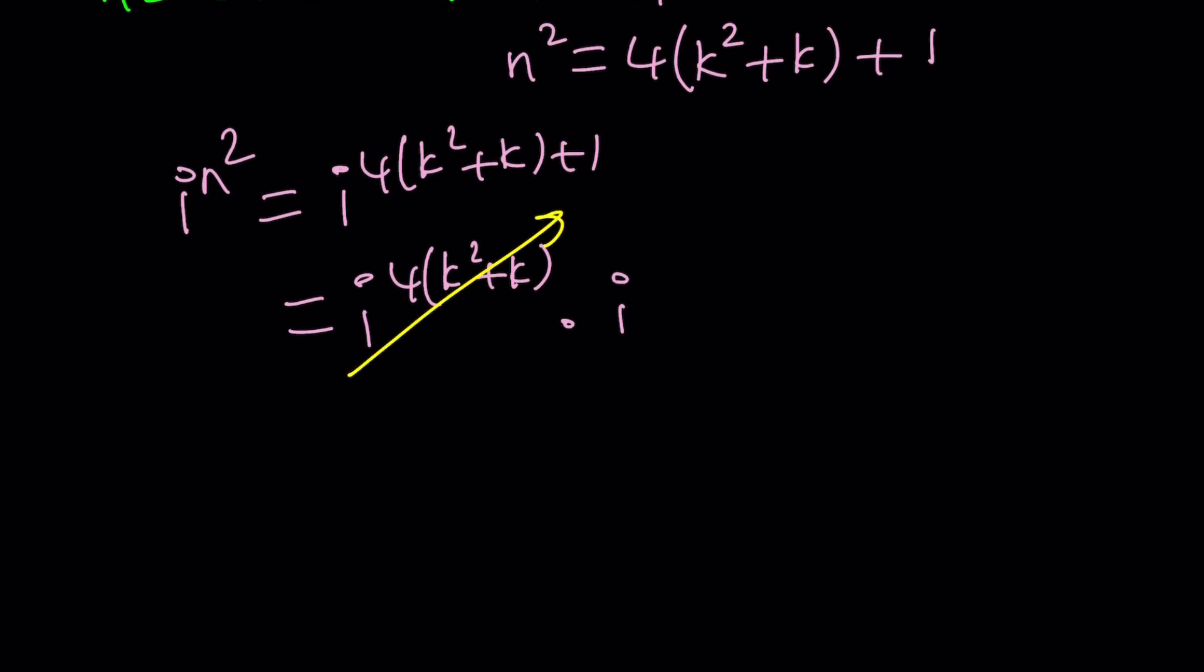And now here, this is going to be 1, as you know, right? Because it's i to the fourth to the power of something else, some other integer. So this is going to be i. So if, in other words, if n is odd, then i to the power n squared is going to be i. Make sense?